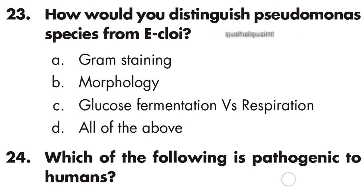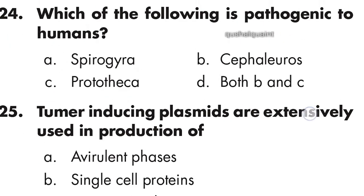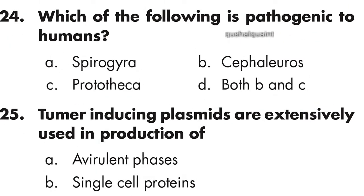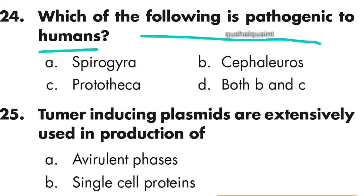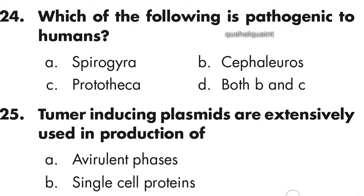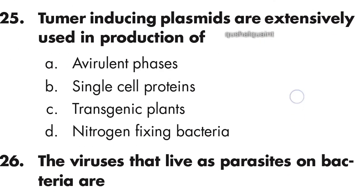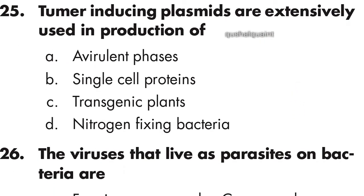Question 24: Which of the following is pathogenic to humans? The answer is Prototheca — option C is correct. Question 25: Tumor-inducing plasmids are extensively used in the production of transgenic plants — option C is correct.